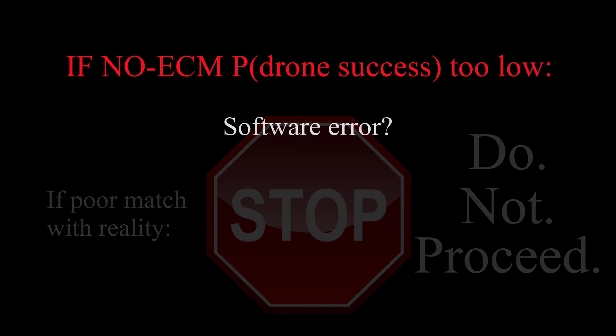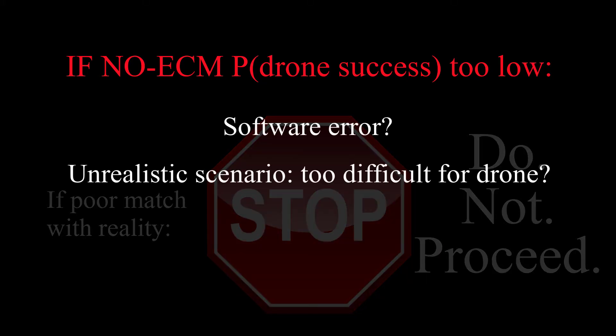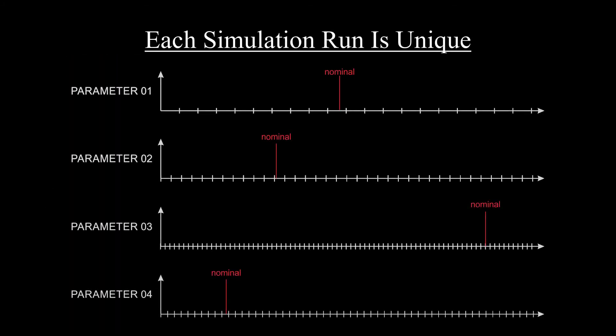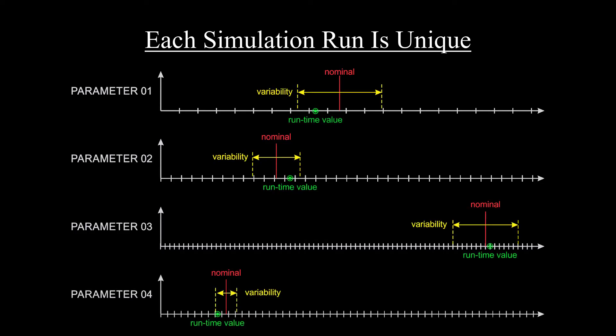It could be a software error or maybe the attack scenario isn't sufficiently realistic. In any case, each run is different. Each simulation run in each population is different. The value of each parameter is randomly assigned at runtime based on the nominal value of that parameter and its allowed variability.